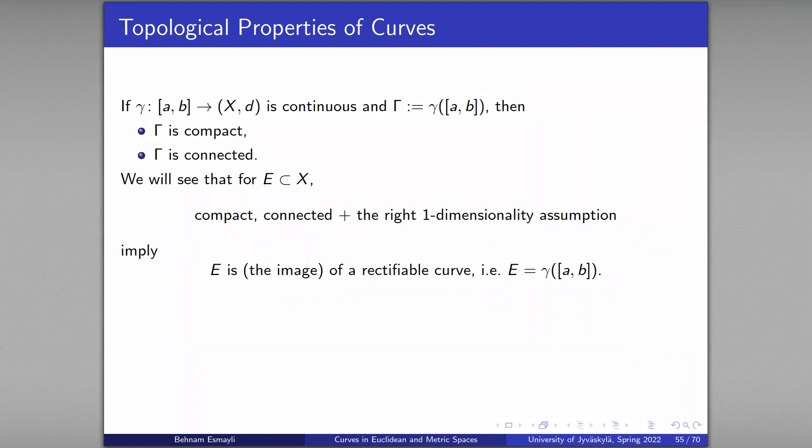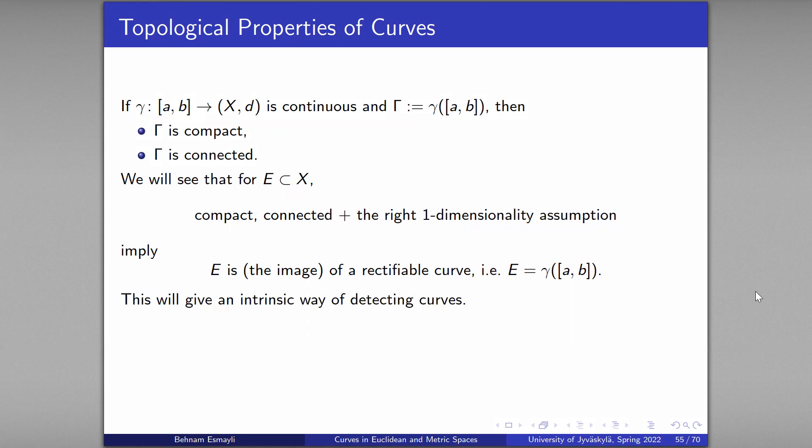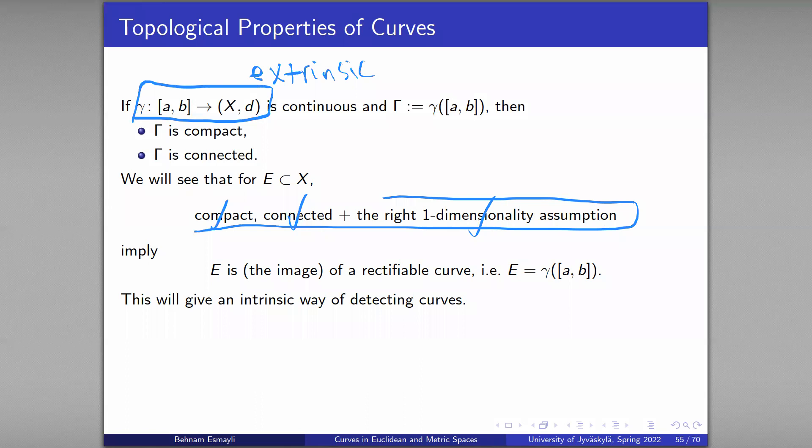And the rectifiability in the sense that this variation, total variation, the supremum over the sum of distances of gamma(t_{i+1}) minus gamma(t_i) over all partitions of the curve is finite. Philosophically, this is really interesting because these properties listed here are all intrinsic. You look at the set and decide if it's compact, if it's connected, and this condition also will be intrinsic. Whereas the original definition of a curve is by its very construction an extrinsic concept, because you parameterize a subset from a subset of Euclidean R^1.